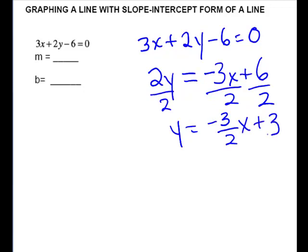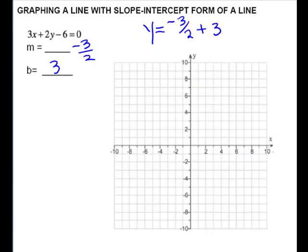So y equals negative 3 halves x plus 3. And so we have our information that we need. Our slope will be negative 3 halves. Our y-intercept will be 3. So now we're ready to graph. We plot the y-intercept first, so we're on the y-axis. And we're going up to 3 to make our point.